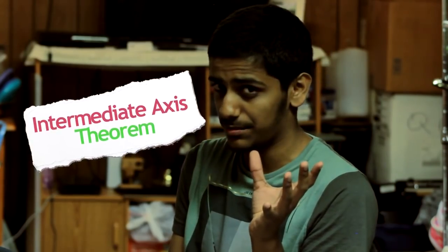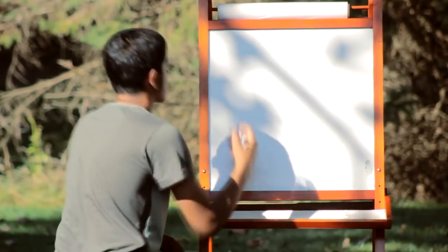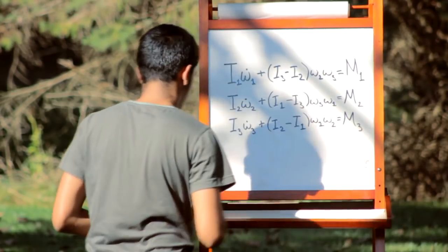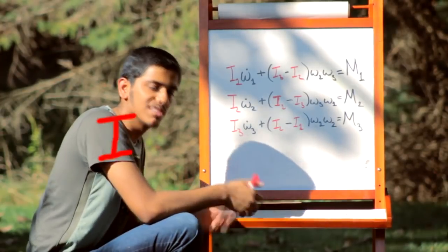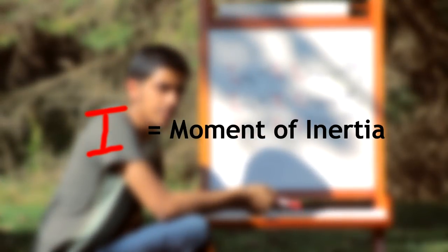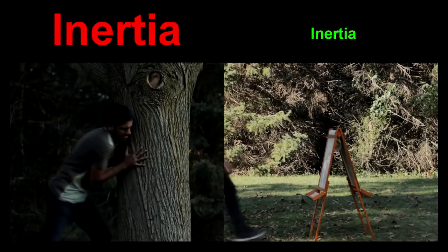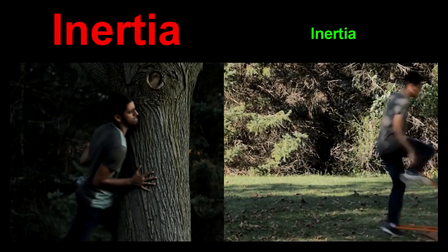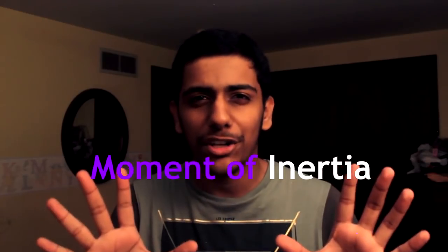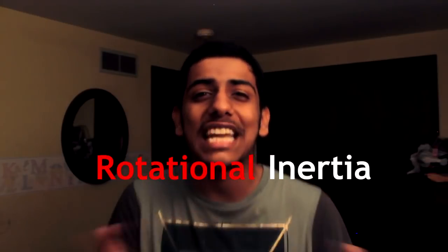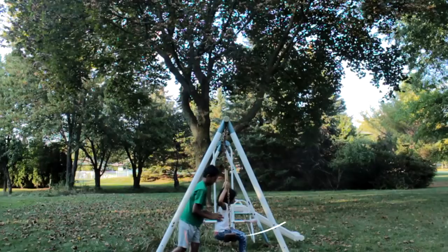It's also because of this really cool thing called the intermediate axis theorem. There's a set of equations that describe this, and you'll see a lot of the letter 'I' — that's because at the core of this is something called moment of inertia. Inertia is essentially how hard or easy it is to move something that's not moving, or stop something that's in motion. Moment of inertia is just a fancy way of saying rotational inertia — in other words, how hard it is to move or stop something that's rotating or moving in a circle.